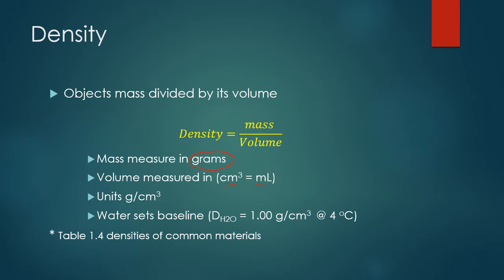We'll also see volume measured in milliliters, especially with liquids. Keep in mind that one centimeter cubed is equal to one milliliter — those units are interchangeable. This is extremely helpful with calculations, especially in lab. When using grams for mass and centimeters cubed for volume, the units on density are grams per centimeter cubed. We'll also often see grams per milliliter. There are other units possible, but these are the most common in this course.